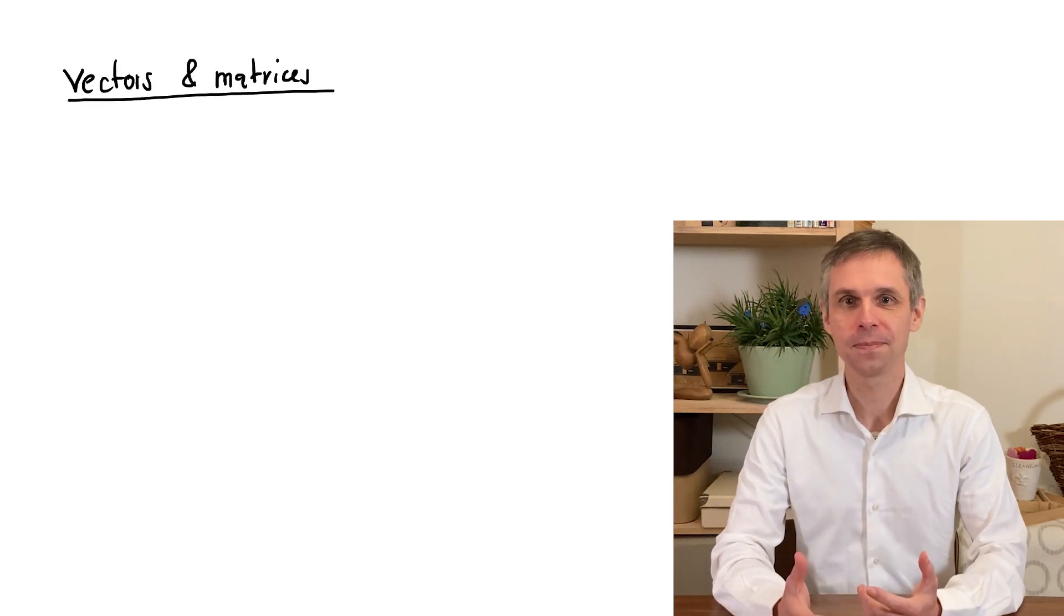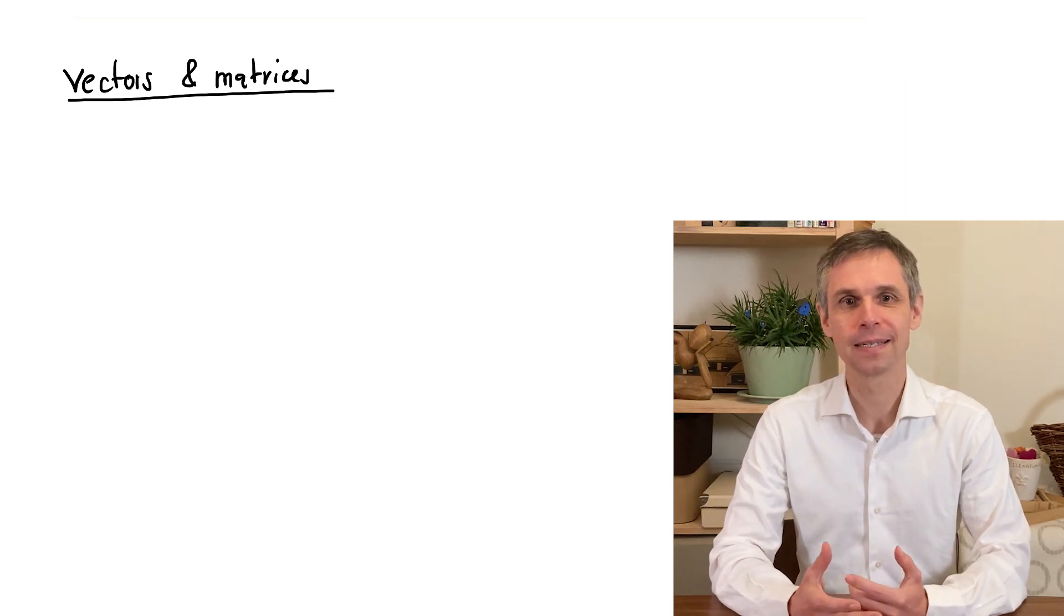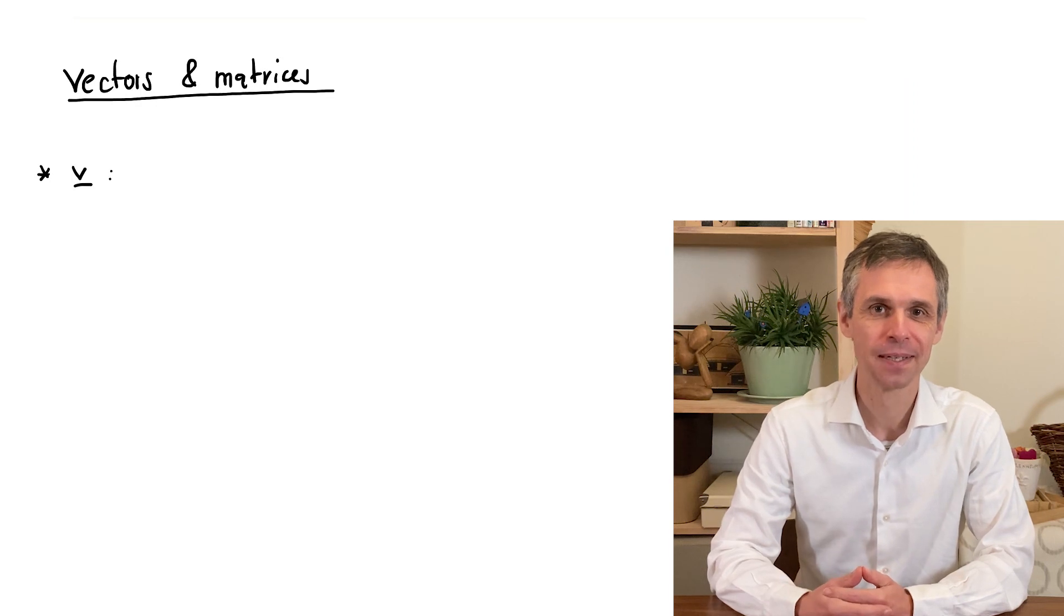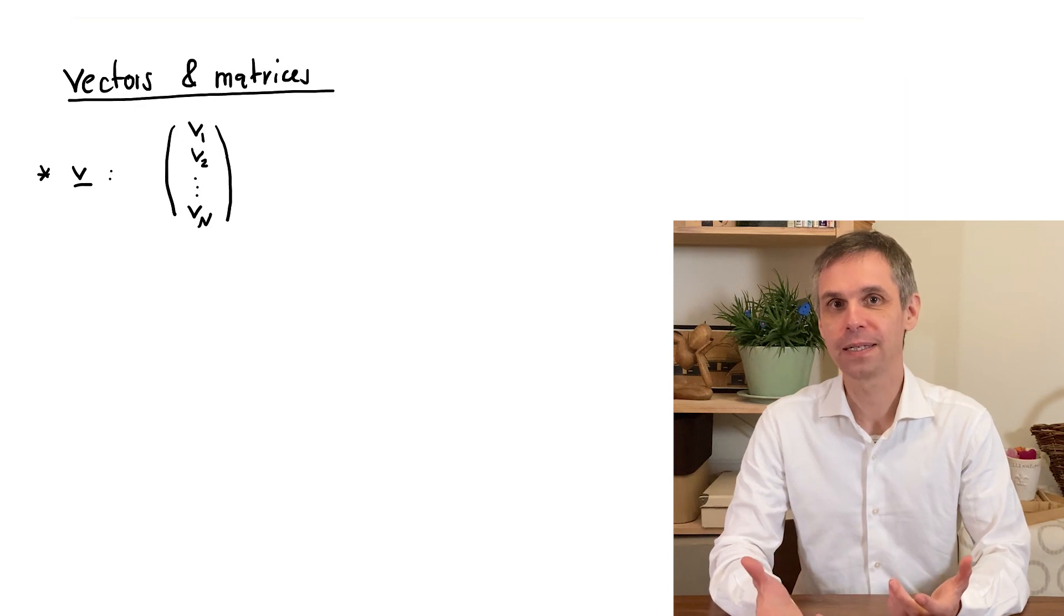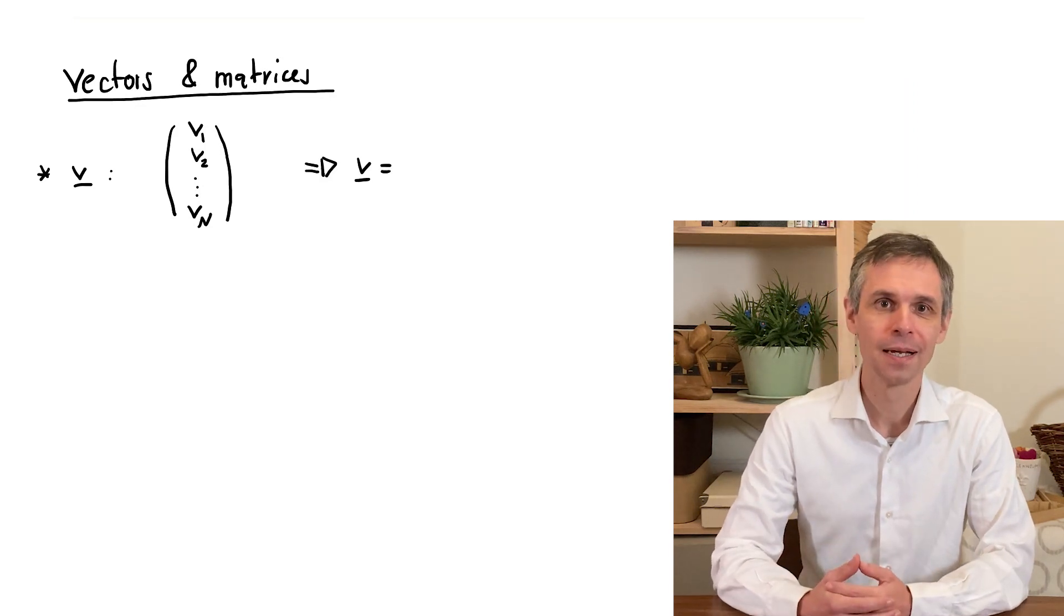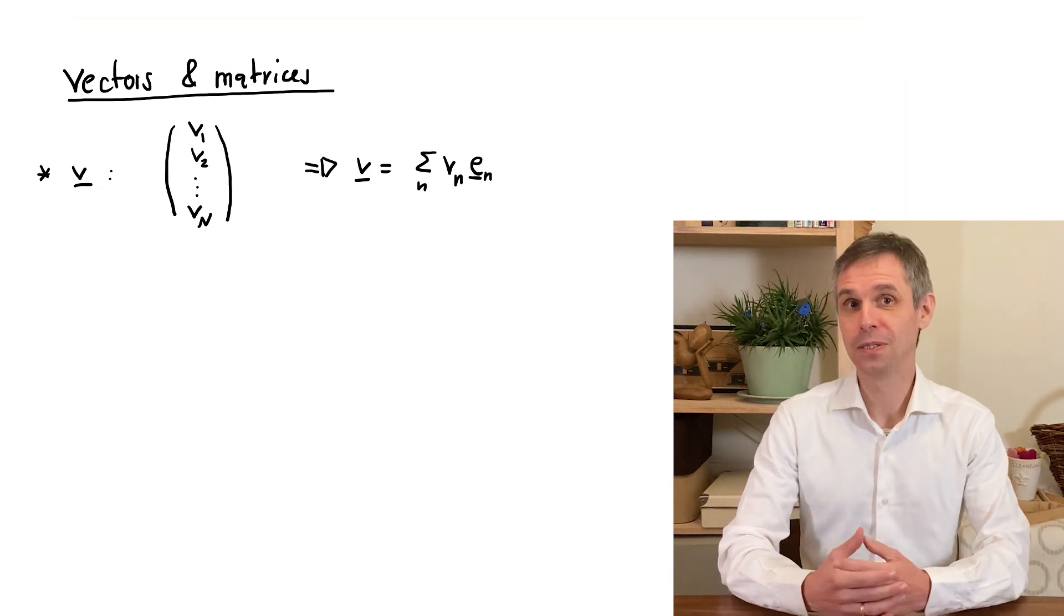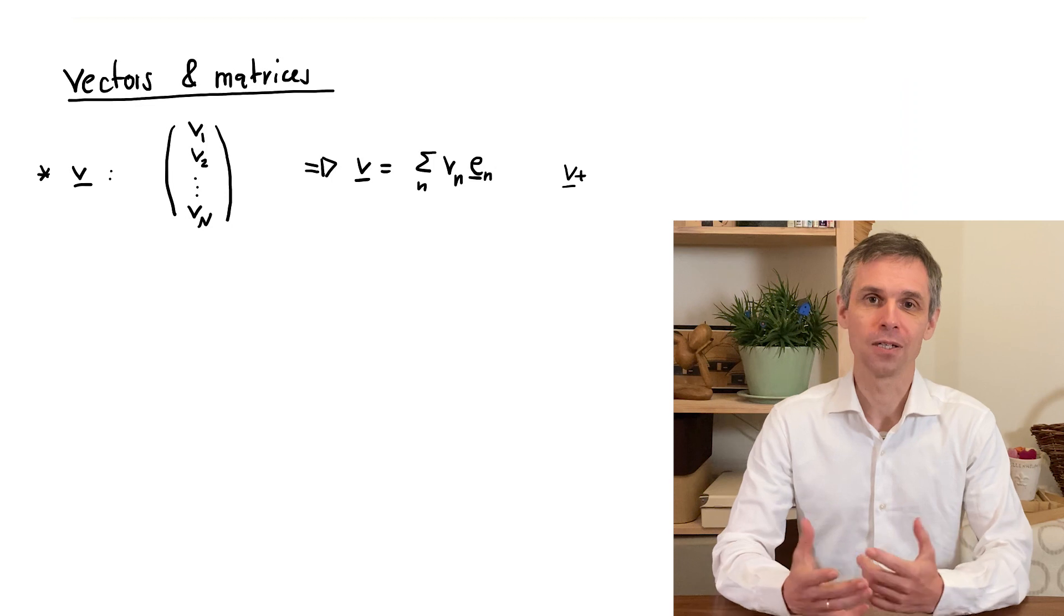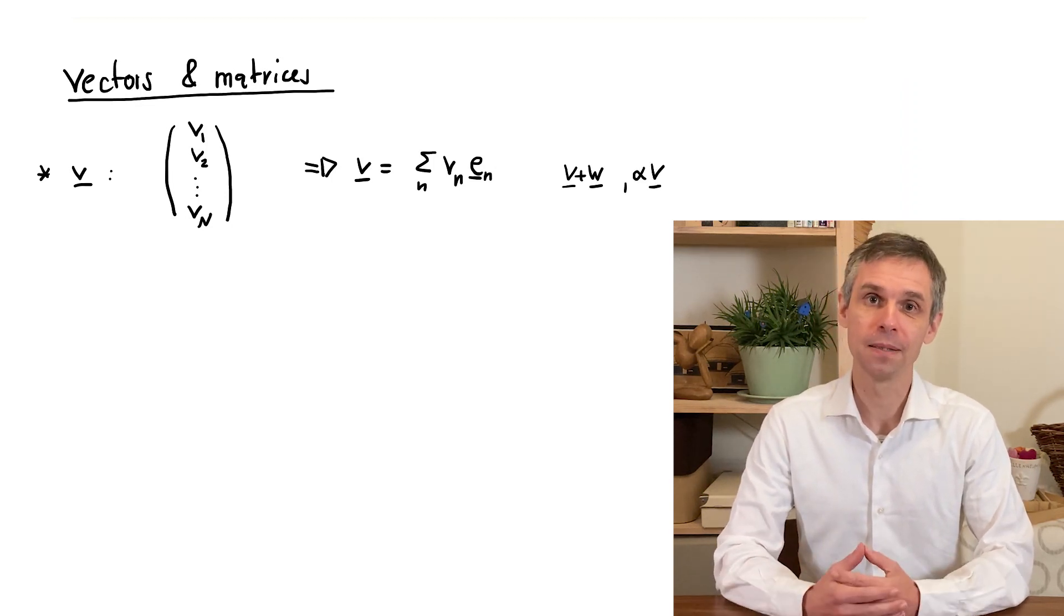Just as complex numbers, vectors and matrices appear very naturally in quantum mechanics, hence are intimately tied to the mathematical structure of this theory. We will encounter vectors both in very specific forms, such as a column vector with n components, and also written more generally with basis vectors, denoted here as En. And we will carry out standard operations on these vectors, such as adding them up or multiplying them by a scalar.